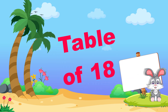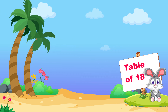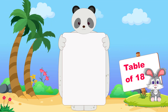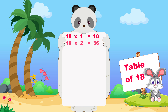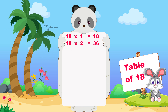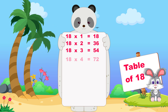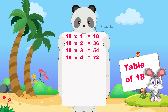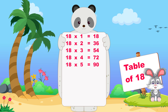Let's learn now table of eighteen. Eighteen ones are eighteen, eighteen twos are thirty-six, eighteen threes are fifty-four, eighteen fours are seventy-two, eighteen fives are ninety.